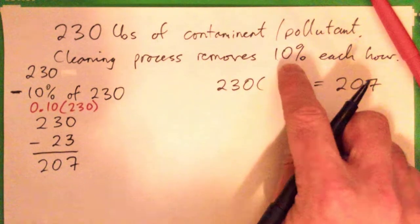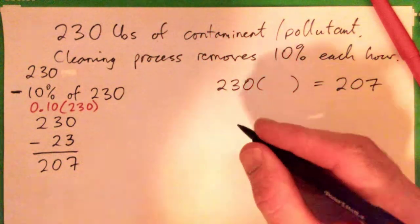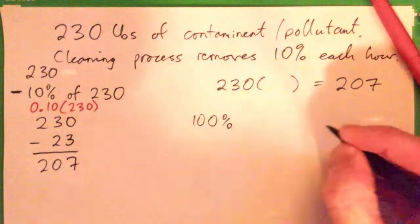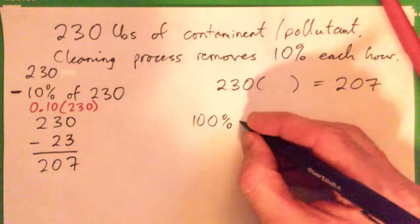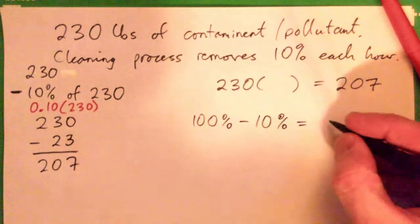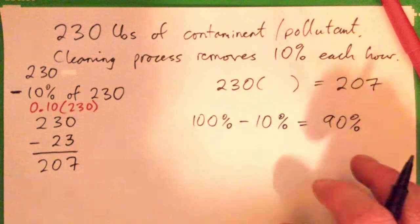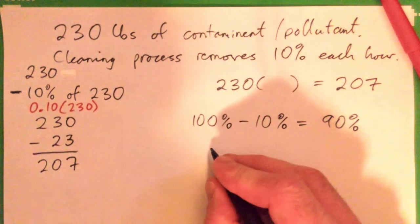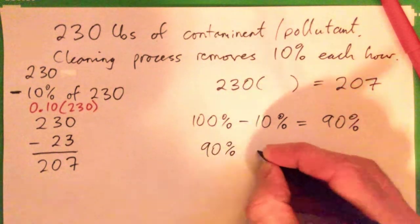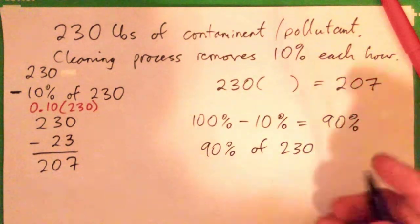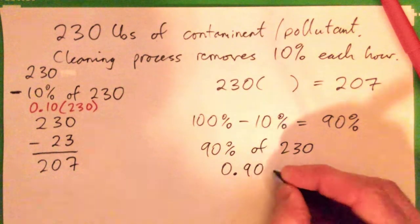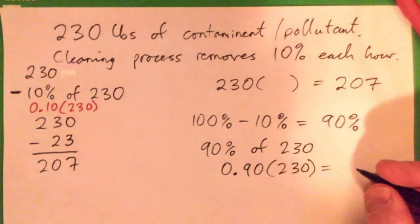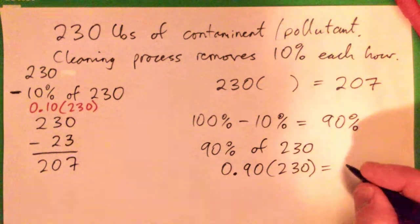What we need to think about is the whole amount is 100%. And if we clean out 10%, 100% minus 10% is 90%. So getting 90% of something is actually the same thing as subtracting 10% of that thing. So we can go 90% of 230, and that's 0.9 or 0.90 times 230, and that equals 207.